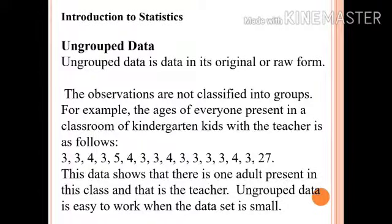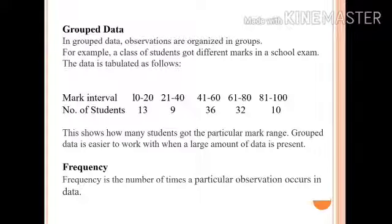Ungrouped Data is easy to work with when the data set is small. Now when we talk about grouped data, in grouped data observations are organized in groups. For example, a class of students got different marks in a school exam. The data is tabulated as marks interval and number of students. This shows how many students got particular mark range. Grouped data is easier to work with when a large amount of data is present.